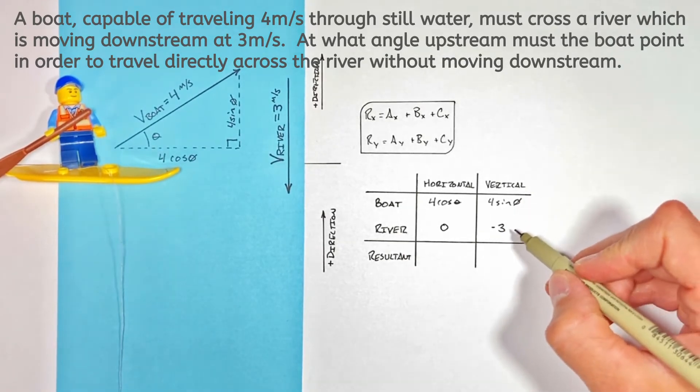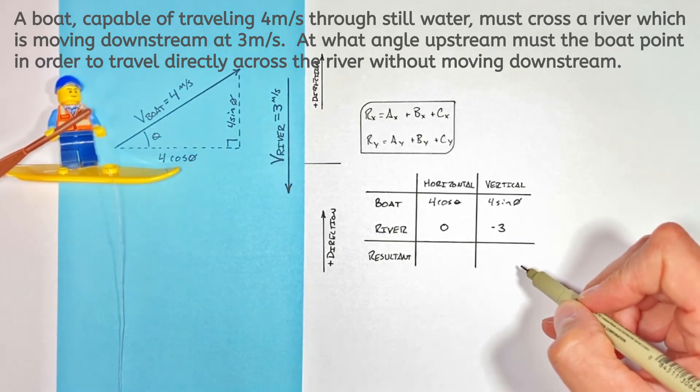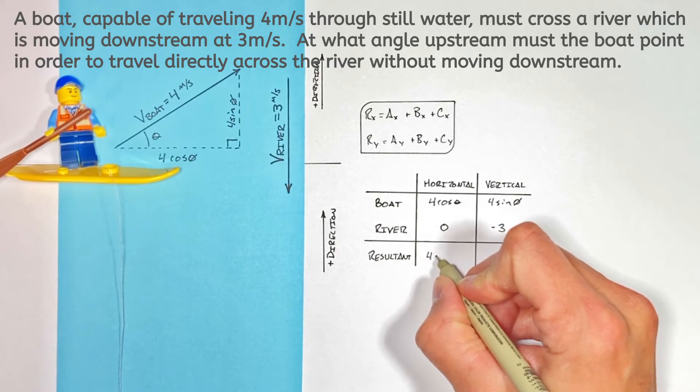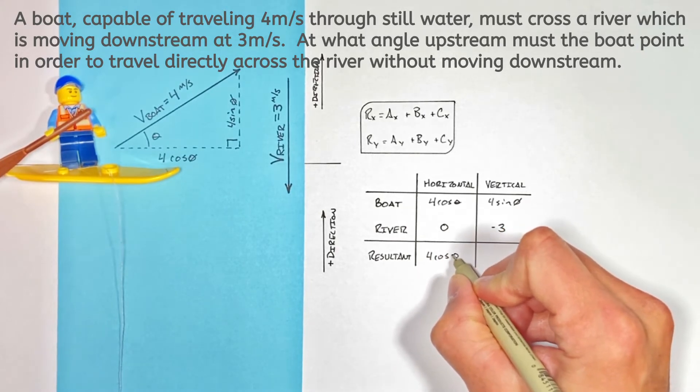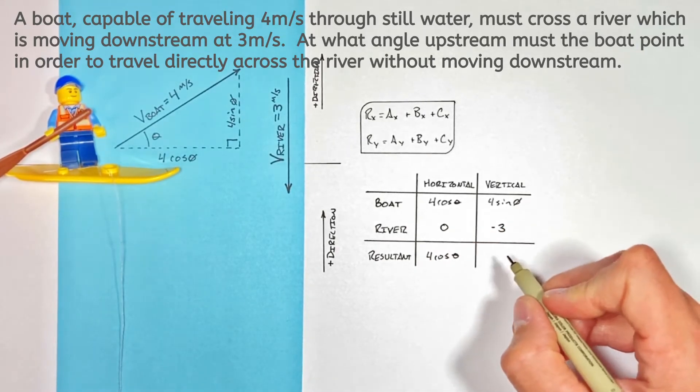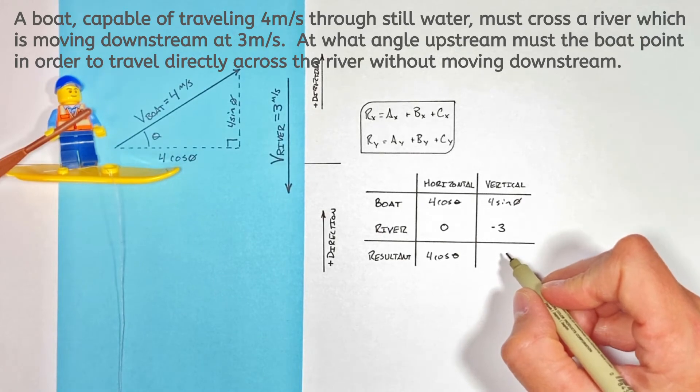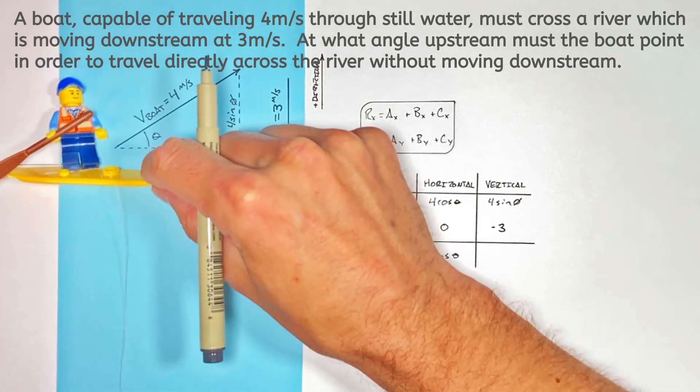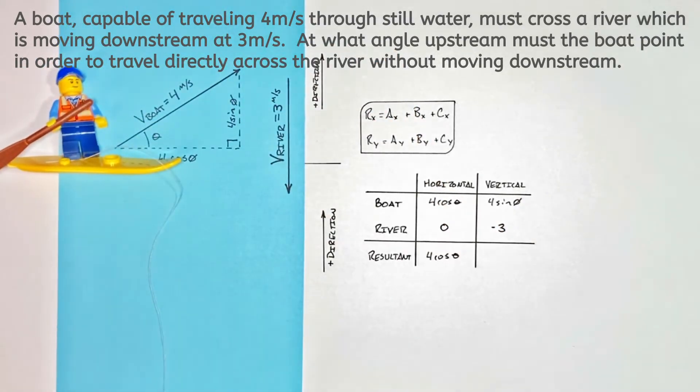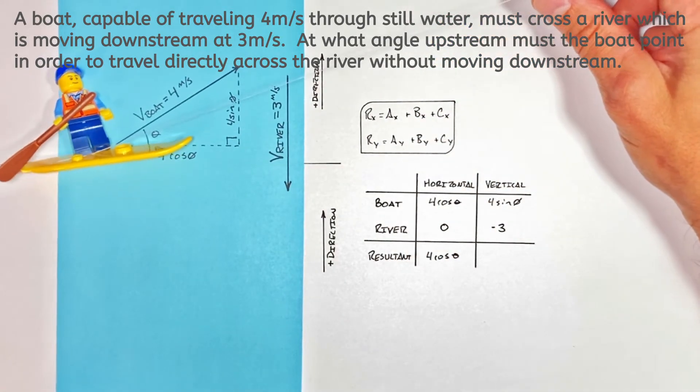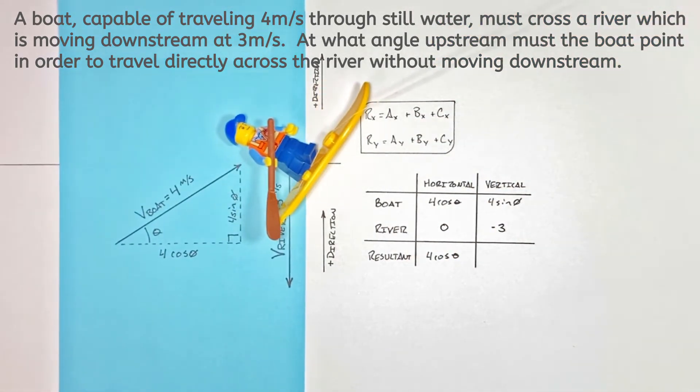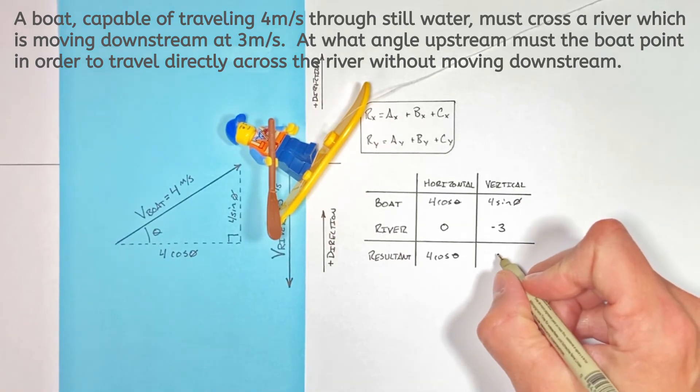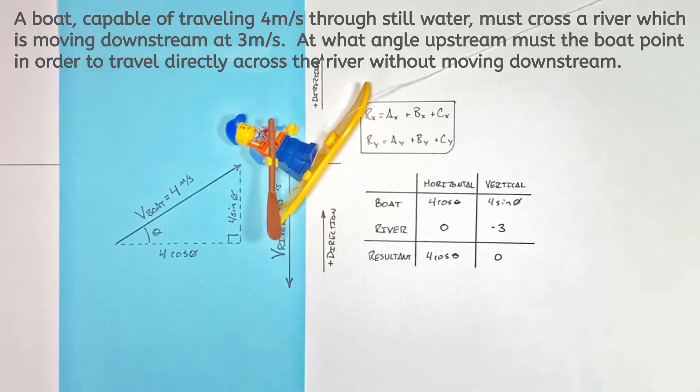Now, the trick in the whole problem occurs when we look at the resultant vector. You see, in the horizontal axis, we know the resultant velocity is 4cosθ, but vertically—and this is key—we don't want the boat to move up or downstream. We want the boat to go straight across the river. So that means the resultant velocity vertically is zero.